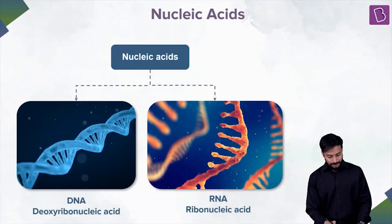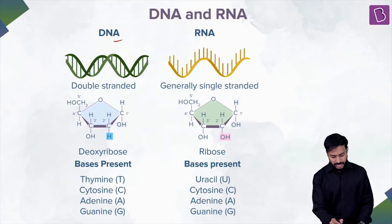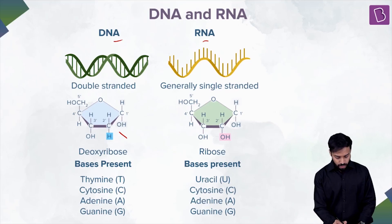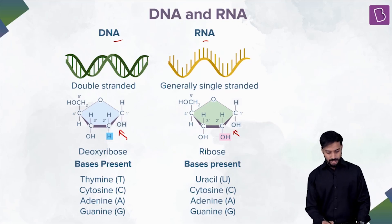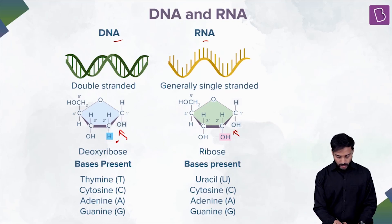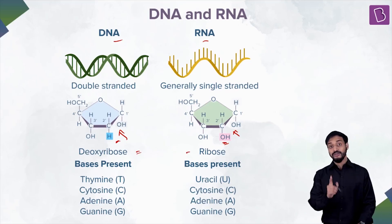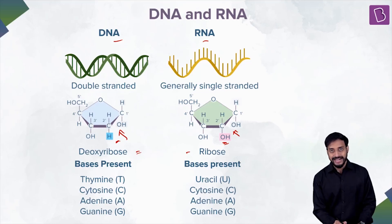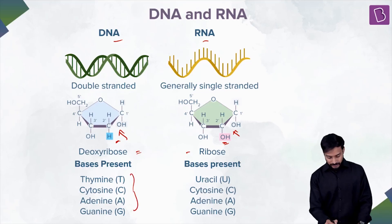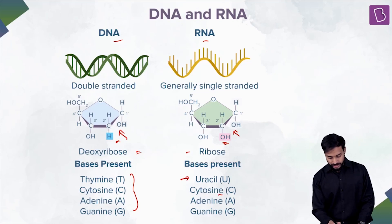Types of nucleic acids: DNA and RNA. The key difference lies at the second carbon — ribose in RNA has an OH group, while deoxyribose in DNA lacks it. In DNA, the bases are thymine, cytosine, adenine, and guanine. In RNA, thymine is replaced by uracil — so it's uracil, cytosine, adenine, and guanine. Remember this important difference.